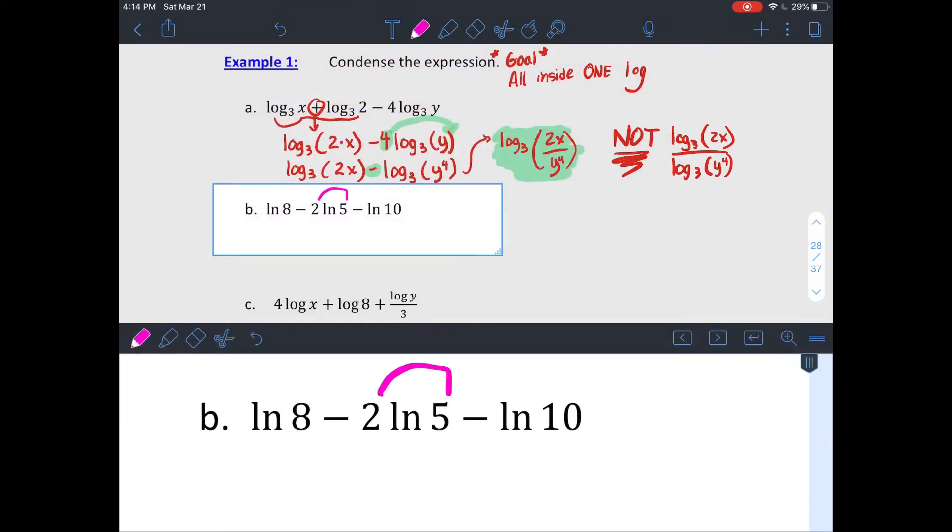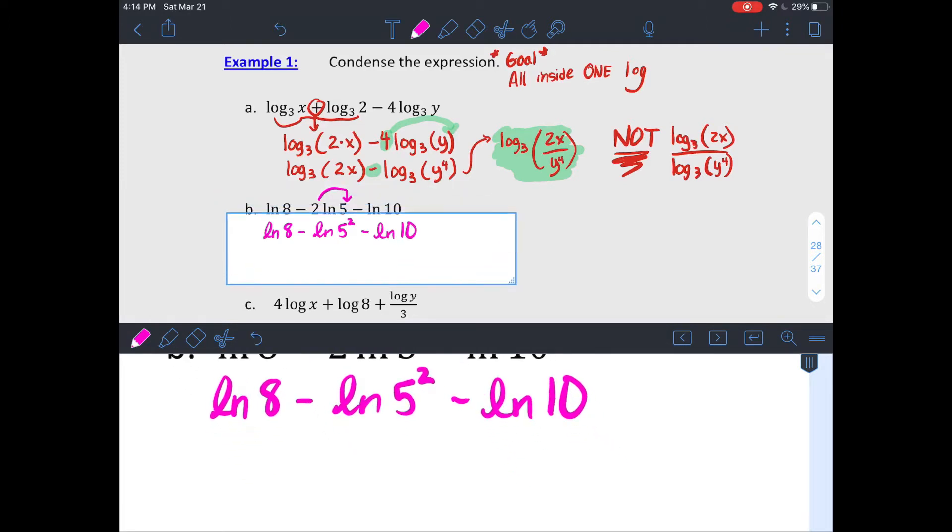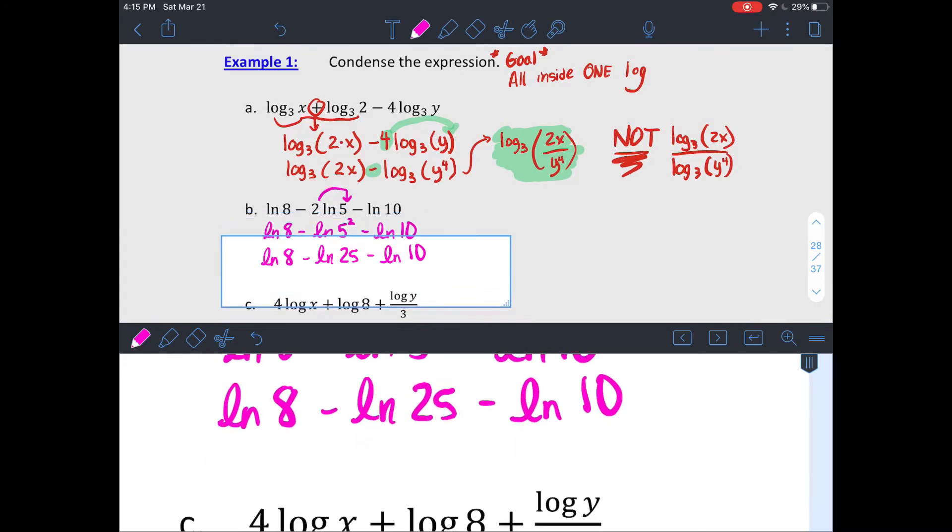Let's do one that's just all numbers. Again, if you have something out in front, that's the same thing as having it as an exponent on the inside. Put those back inside first. Then I have a bunch of natural logs. Subtraction means condense it back into division. So after I make this 5 squared into 25, I'm going to take these first two. My natural log of 8 minus my natural log of 25 and turn that into natural log of 8 divided by 25.